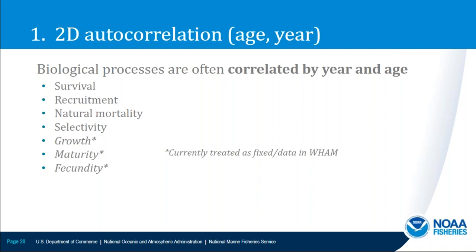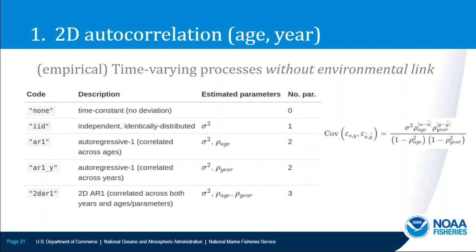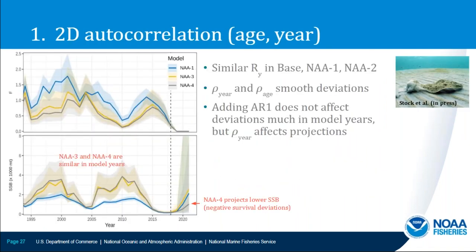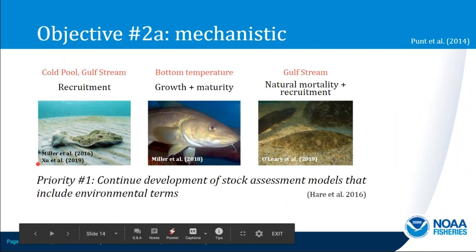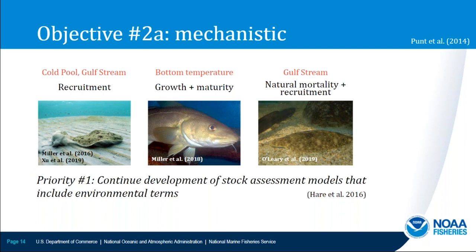Last question: you mentioned the Gulf Stream Index but only showed Cold Pool — did you use any Gulf Stream Index? The Cold Pool was just used as an example. The Haikun Xu paper highlighted used the Gulf Stream Index and tested whether it would be better to use the Gulf Stream or the Cold Pool, along with a couple of other environmental indices. Specifically for yellowtail flounder, they've looked at multiple environmental indices affecting recruitment.